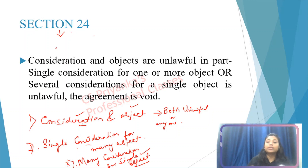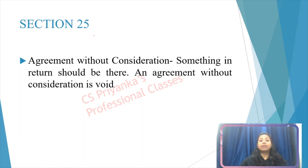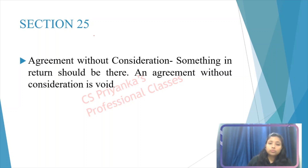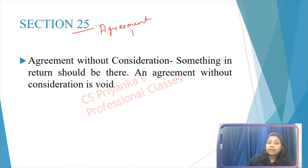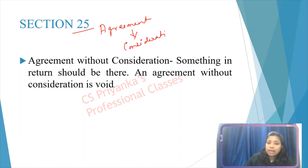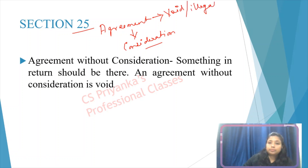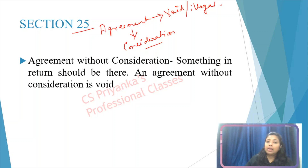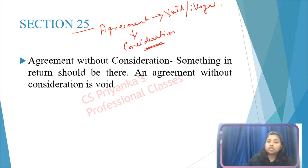So that is coming under section 24. Next is section 25. Such an agreement will also be treated as void or illegal if you are preparing an agreement and you have not mentioned any consideration. Because consideration is one of the essentials — if you don't mention any consideration or value in that agreement, then such agreement will be treated as void or illegal.